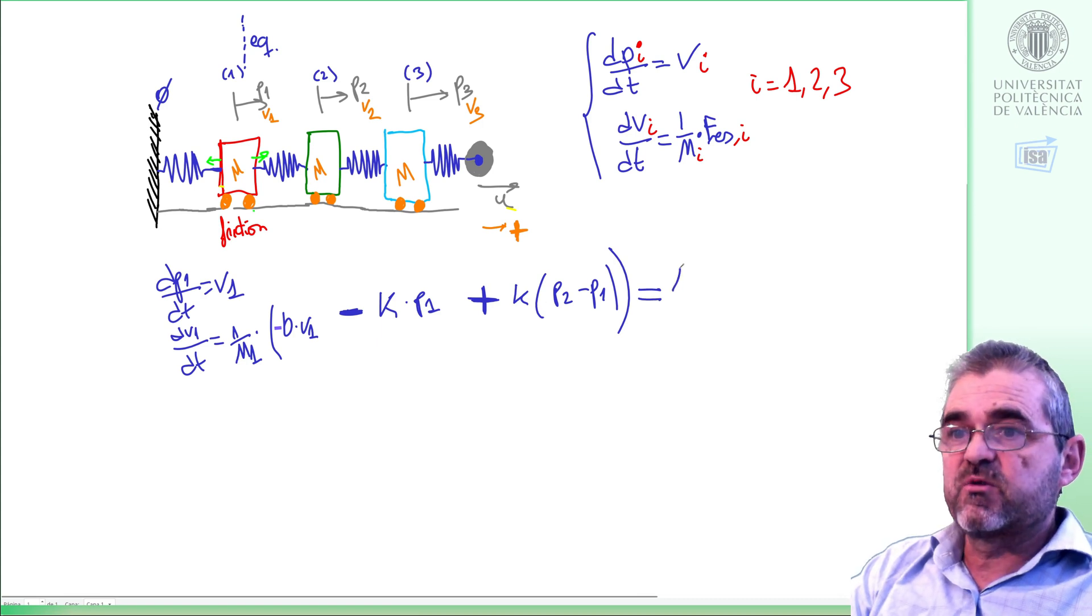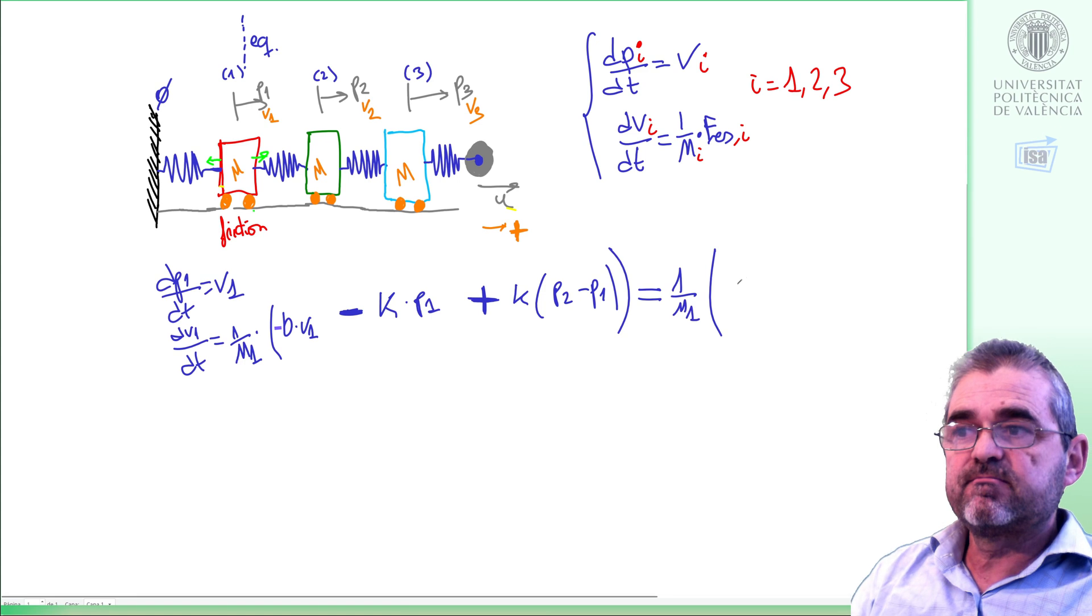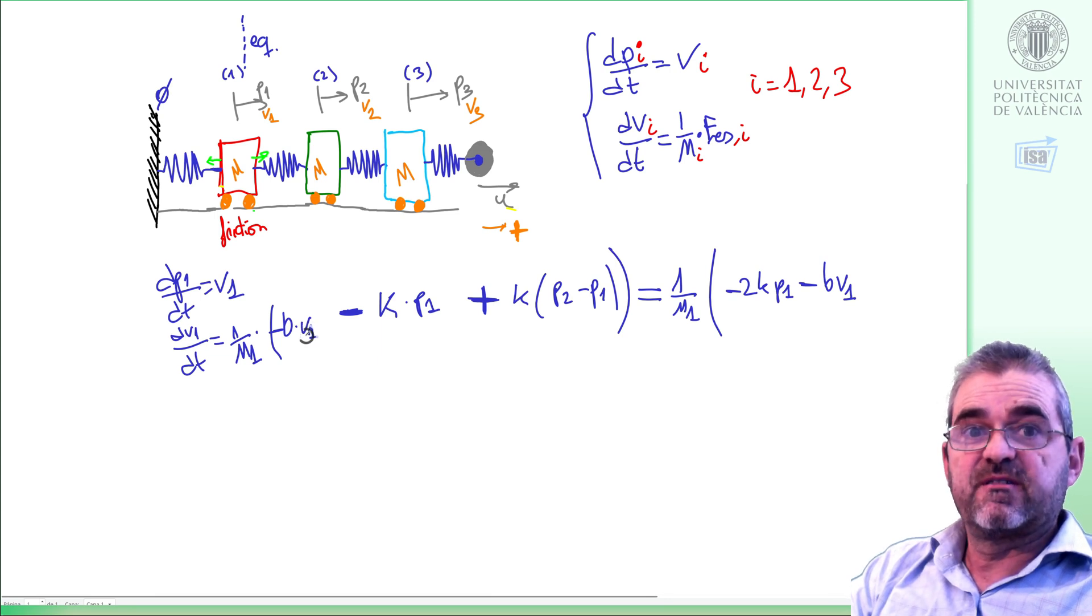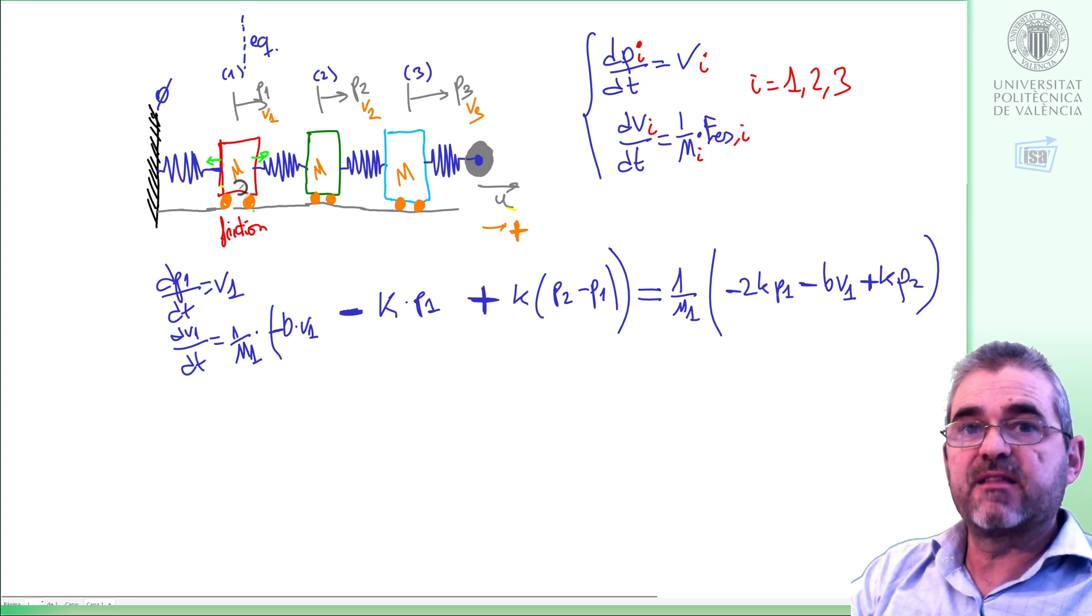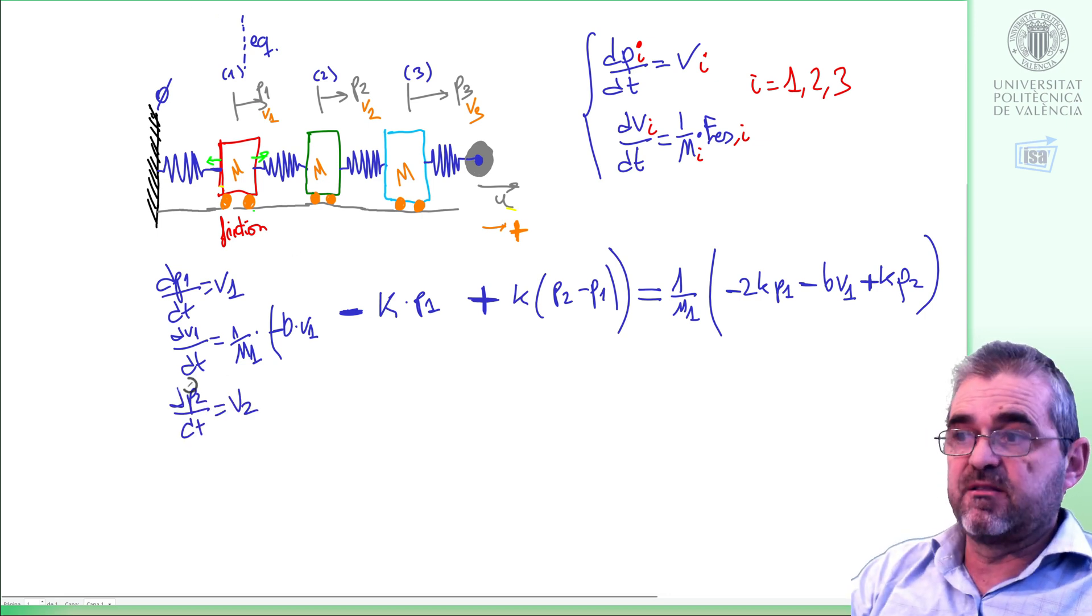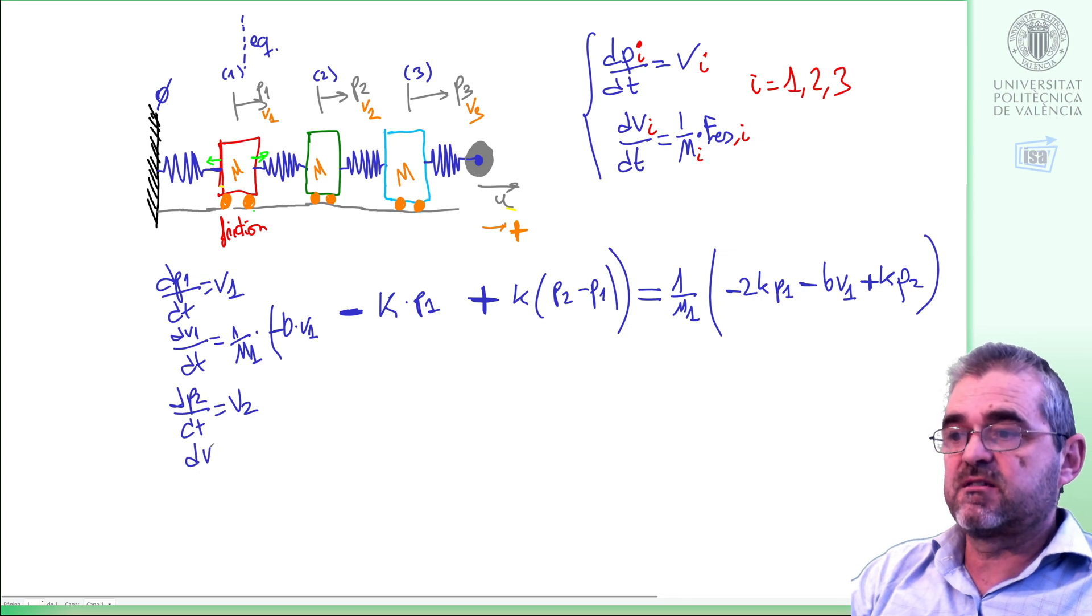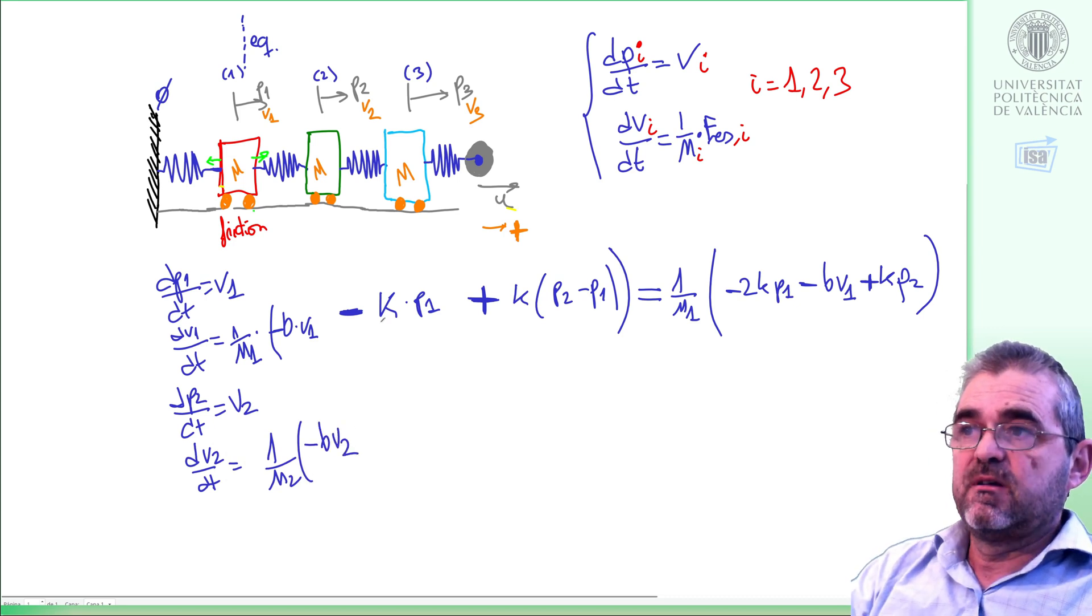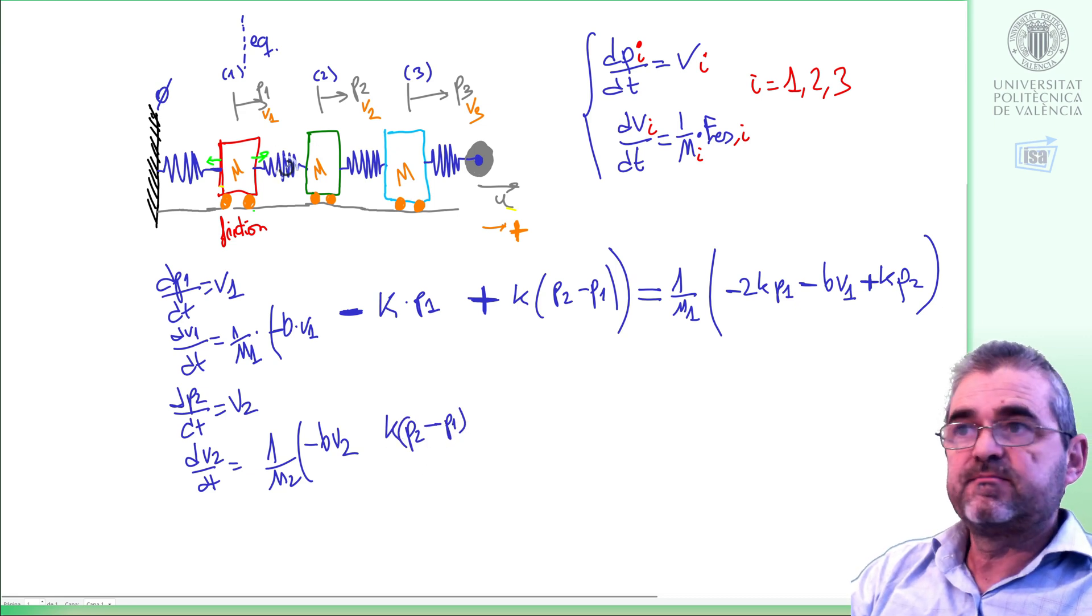So, carrying out some operations we can say that the spring equation is this, with a minus here because also if P1 is positive then friction goes in the negative direction. Then there we have the equation of the first mass in red. The other equations are very similar. The green mass: the derivative of its position is speed and its acceleration will be 1 over mass 2, and again friction, the left spring